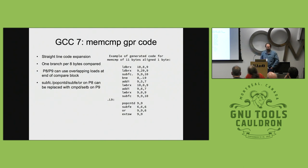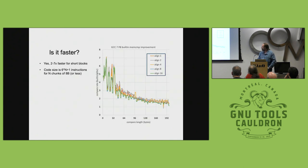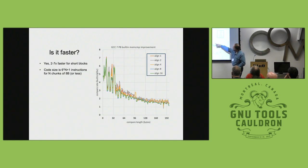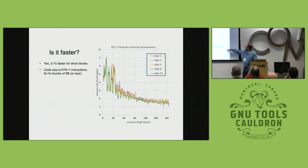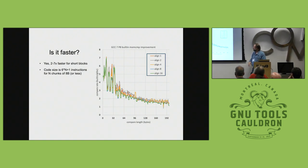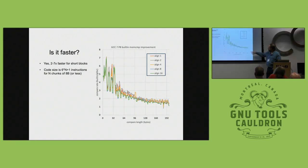The bottom line is a multiple of speed. For really short strings it's like five times faster, tapering down from there. This is memcompare on a Power8, back when I was doing this for GCC 7.